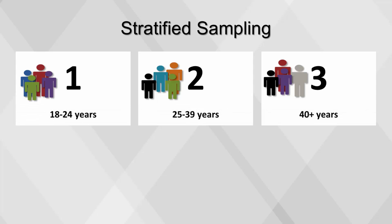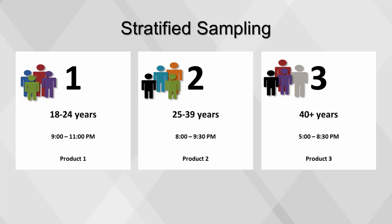For example, let's say we're looking at our television viewers by age group. We have three strata: 18 to 24, 25 to 39, and 40+. We find that their peak viewing times vary based on age, thus we can make better decisions about which product to advertise during which time period.